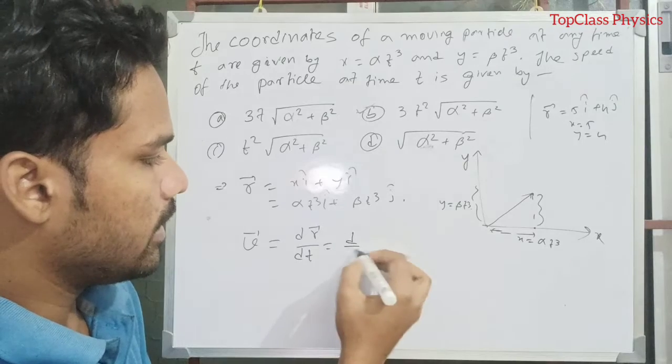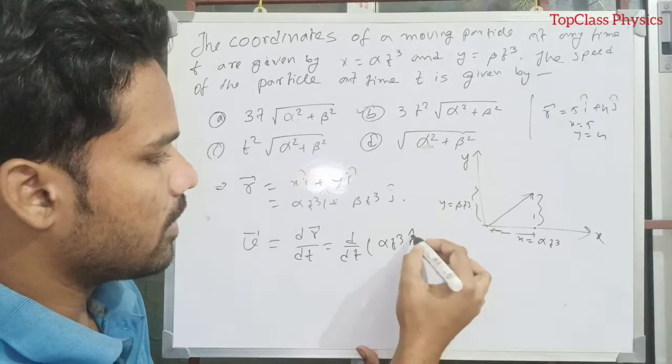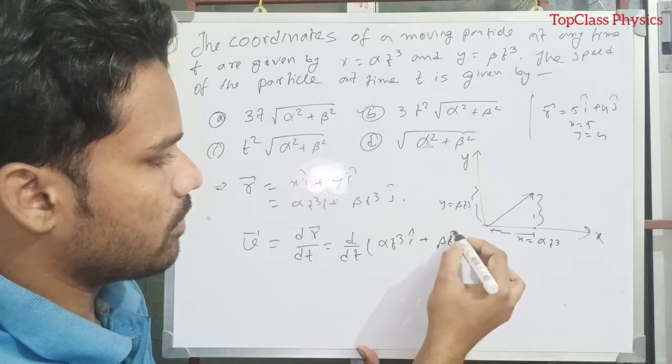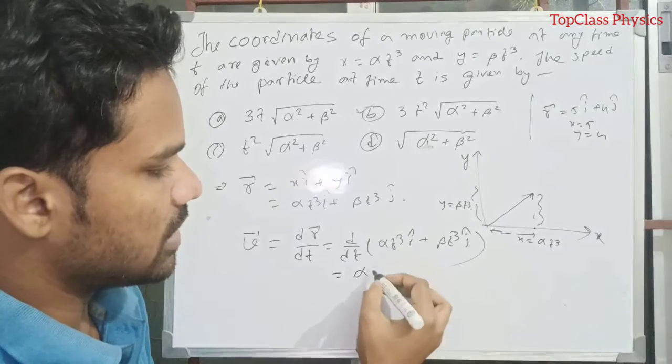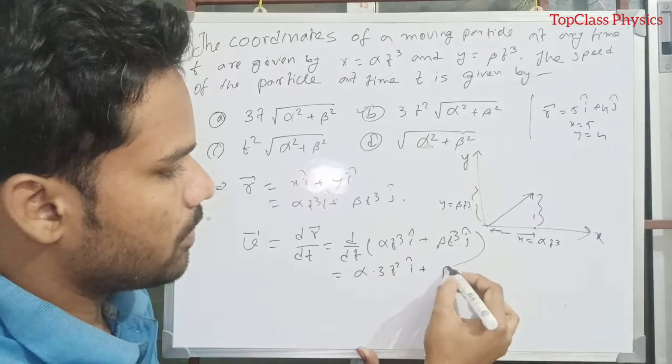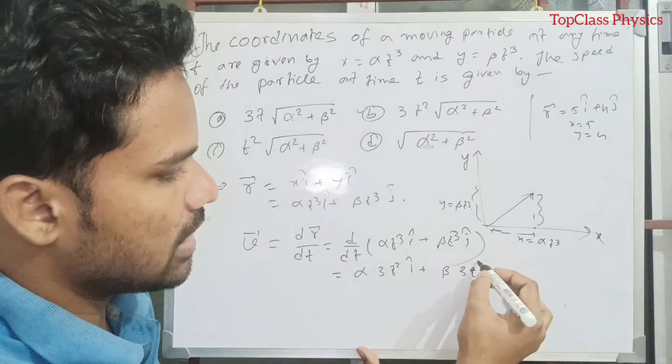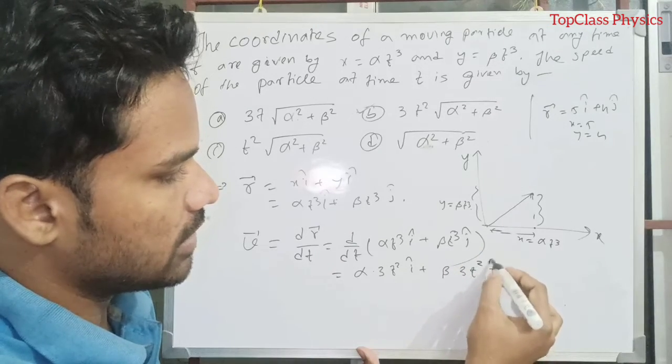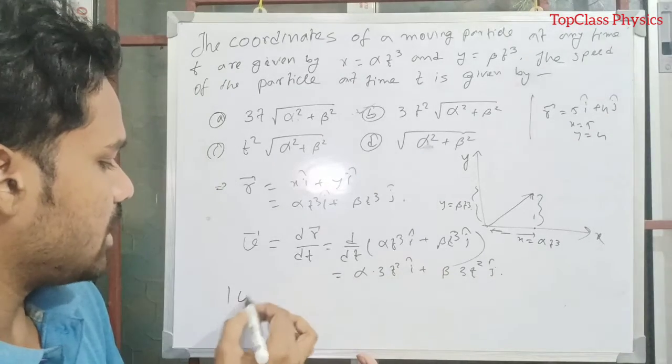V means dR by dt, so just differentiate with respect to T. That is d/dt of alpha T cube i cap plus beta T cube j cap. That means alpha is constant, T cube gives 3 alpha T square i cap plus 3 beta T square j cap. This is velocity.